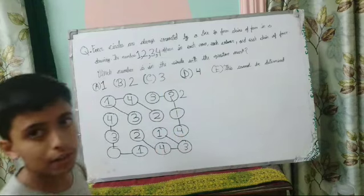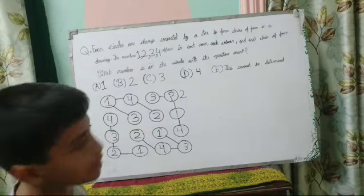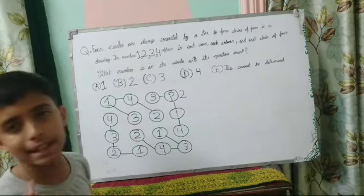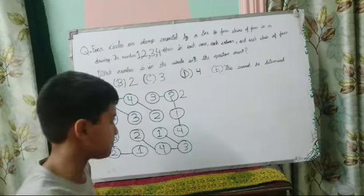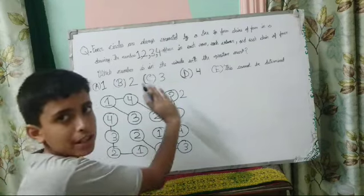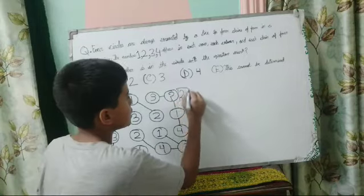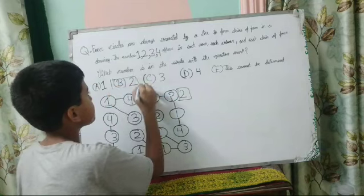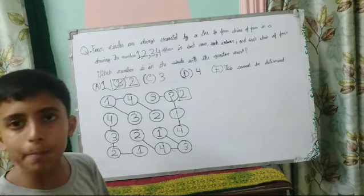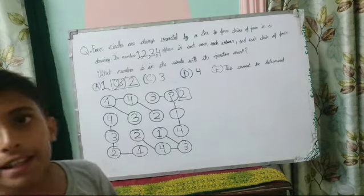1, 4, and 3 are already occupied in this row, so 2 will come here. Now you can check that all numbers are different in each row, in each column, and each chain of 4. In a competitive exam, you only have to stop at the question mark — the answer is B. But I explained the whole question for better understanding. I hope you have understood. Thank you and have a nice day.